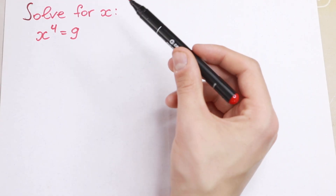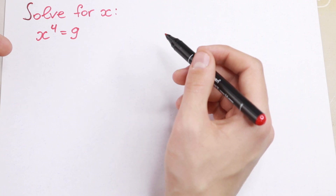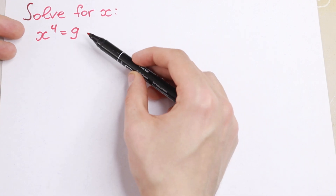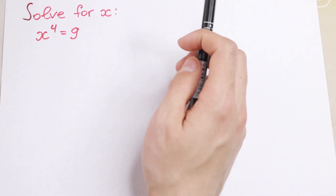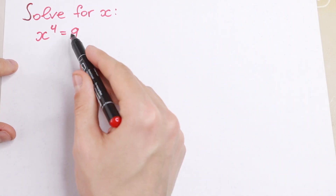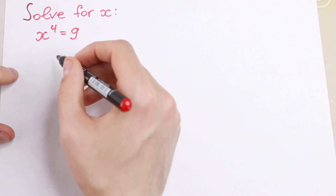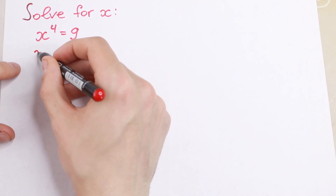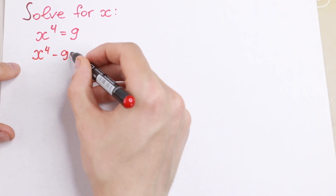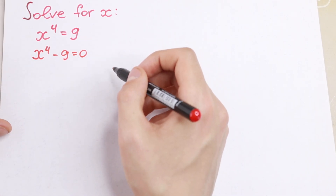And let's find them. I want to show you that it does not make this problem quick, because you can easily make a mistake. So take a look — bring this 9 to the left. We will have x to the fourth power minus 9 equal to 0.